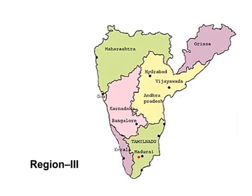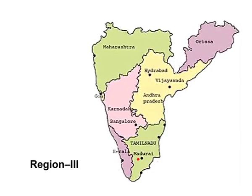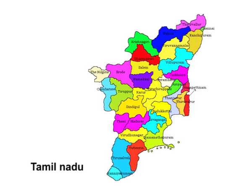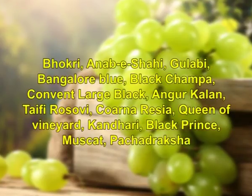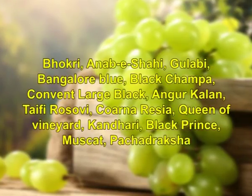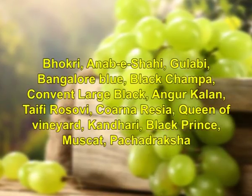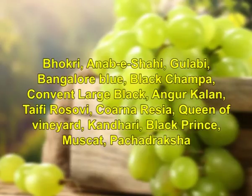Region 3, also within Peninsular India, comprises South Karnataka and Tamil Nadu. Here, varieties like Bokri, Anab-i-Shahi, Gulabi, Bangalore Blue, Black Chamba, Convent Large Black, Angur Kalan, Typhi, Rosalvi, Corona Raisin, Queen of Vineyard, Kandari, Black Prince, Muscat, and Pachatracha are much preferred.